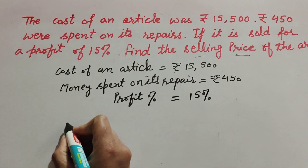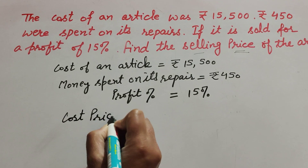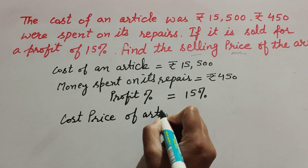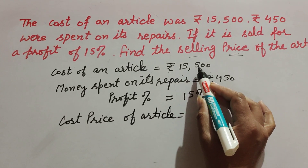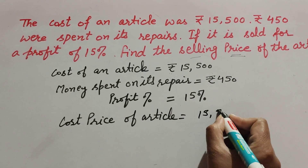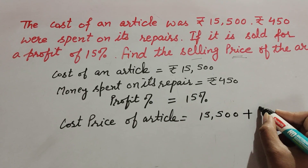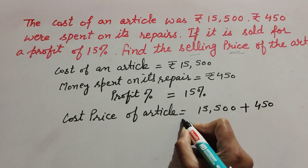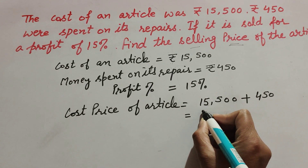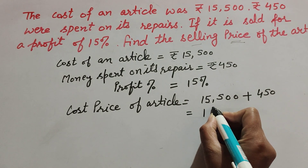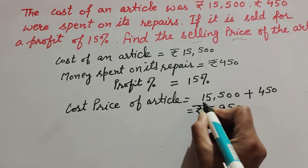First, we find the cost price of the article. Cost price is equal to the cost of the article Rs 15,500 plus Rs 450 spent on its repair, which equals Rs 15,500 plus Rs 450, giving us Rs 15,950.